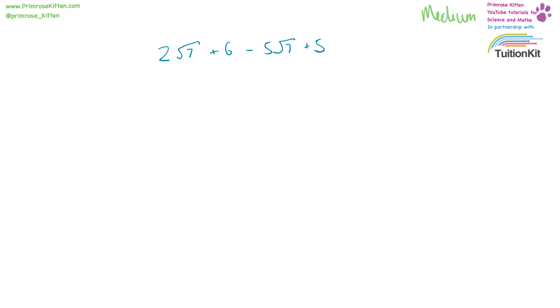2 square root 7 plus 6 minus 5 square root 7 plus 5. 2 square root 7 minus 5 square root 7 is minus 3 square root 7. 6 plus 5 is 11. So the answer is minus 3 square root 7 plus 11.